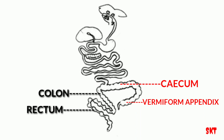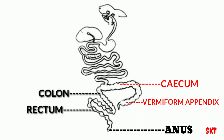The large intestine mainly aids in the formation, temporary storage and elimination of feces. It also plays some important role in digestion, absorption and excretion. The last part is the anus, which lies at the end of the abdomen under the base of the tail, guarded by an anal sphincter.